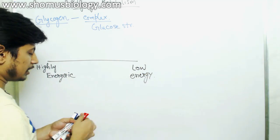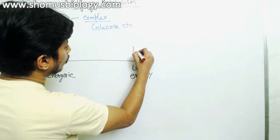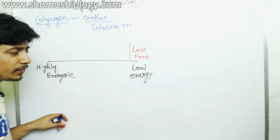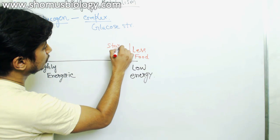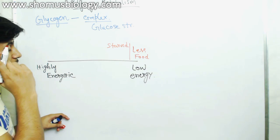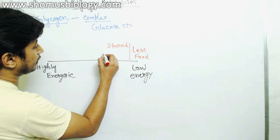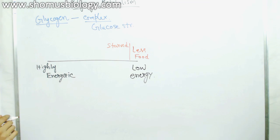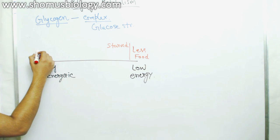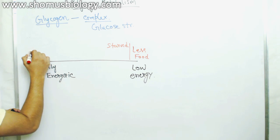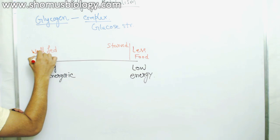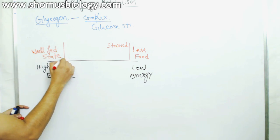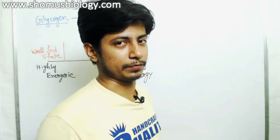The low energy state means we have less food — we call it the starved state. While the highly energetic state is when you have a proper amount of food — we call it the well-fed state. In the well-fed state, your body has access to food and the cells contain all the broken-down products of carbohydrate.